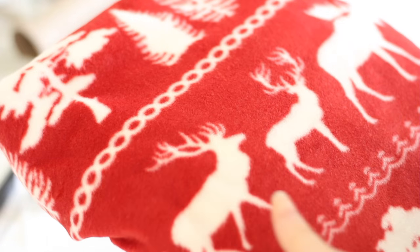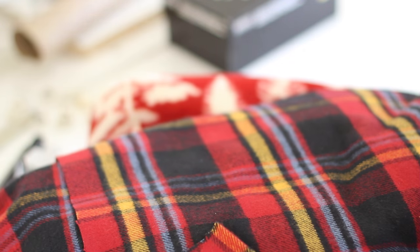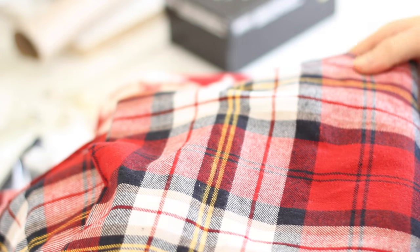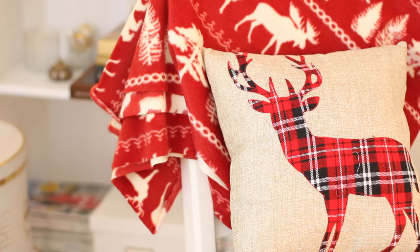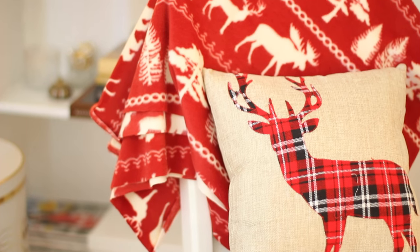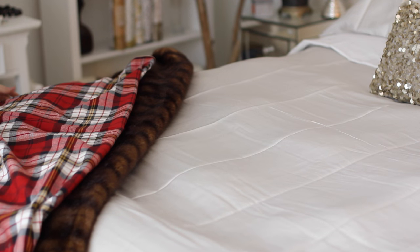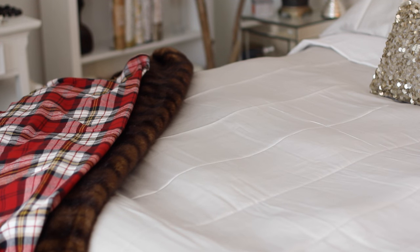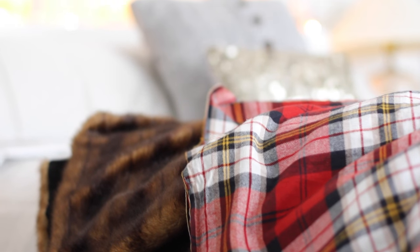Then I went to Joann Fabrics and picked up some different styles in the flannels and the fleece department. They were having a really great sale and you can just get fabric glue and glue two pieces together to create your own blanket which I think is nice to just kind of decorate your room with throws and not spend a fortune on really nice blankets that you may not use all year round.